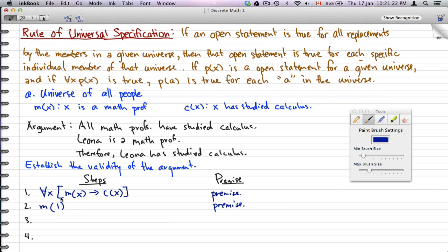So given that, we know that m(l) implies c(l), so that implies that from this statement, with Leona being the arbitrary person in the universe, Leona is a math prof, that will imply that she has studied calculus. So that's step one. Using step one and the rule of universal specification.